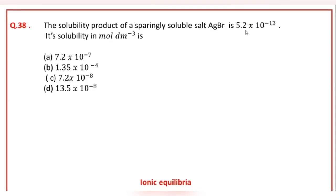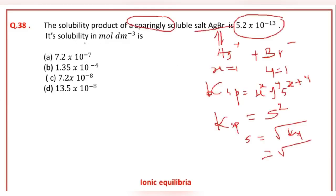The solubility product of a sparingly soluble salt AgBr is 5.2 × 10⁻¹³. Its solubility in mole per dm³ is: the correct answer option is A.